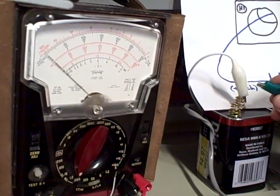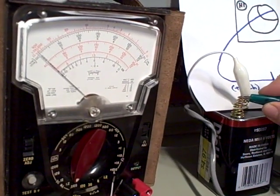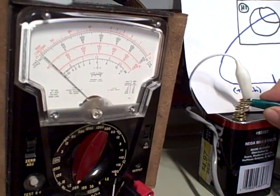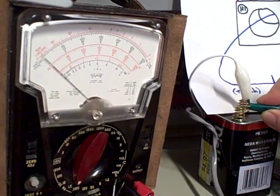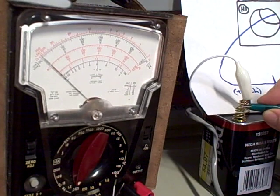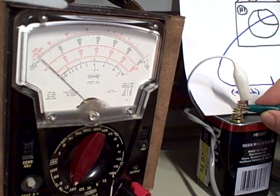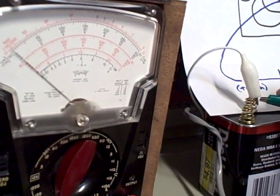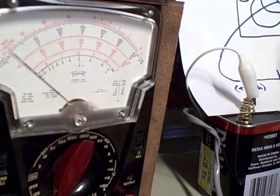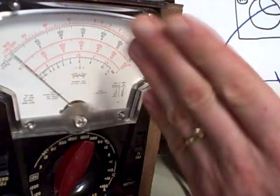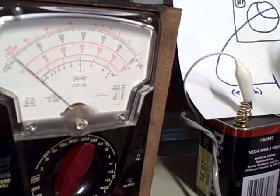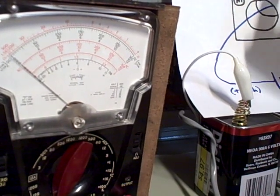So watch the meter as I touch this and I break the connection. You'll see the needle jump up when I touch and go down when I release. Up, down, up, down. So that tells me when I touch this and send current to the CT, the upward jump of the needle tells me the polarity is what I expect. X1 is positive and X2 is negative.